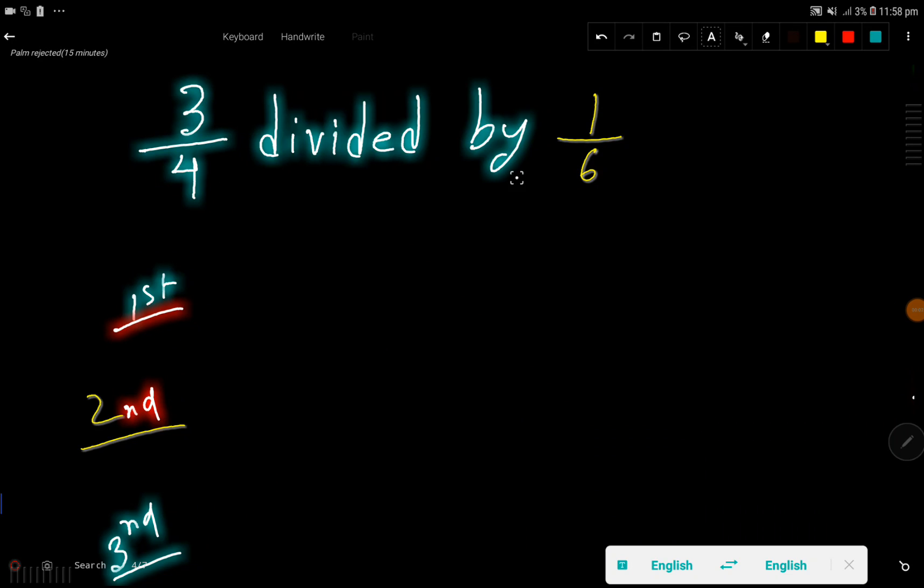3 over 4 divided by 1 over 6. So in the first step I will just translate this thing. Divided by means division sign.